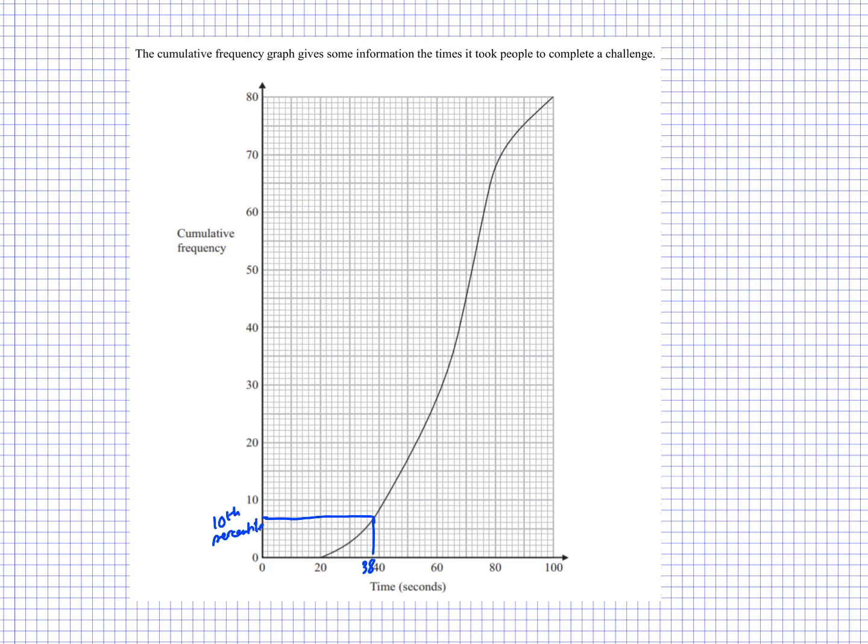And I'm also interested in the 90th percentile. So that would be 8 times 9, which is 72. Or I can think I go back 8 from 80, so it's going to be here. And again, I do the same thing.